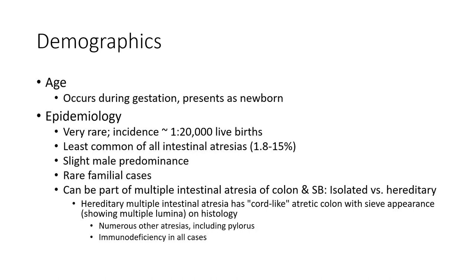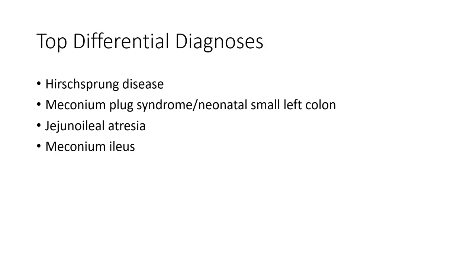Colonic atresia can occur in isolation or as hereditary multiple intestinal atresia, which features calcified and atretic colon with subepithelial calcifications and multiple luminae. Numerous other atresias may include pyloric atresia and immunodeficiency in all cases. Top differential diagnoses include meconium plug syndrome with small left colon, jejuno-ileal atresia, and meconium ileus.